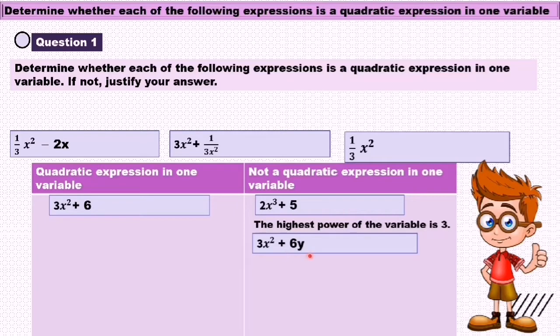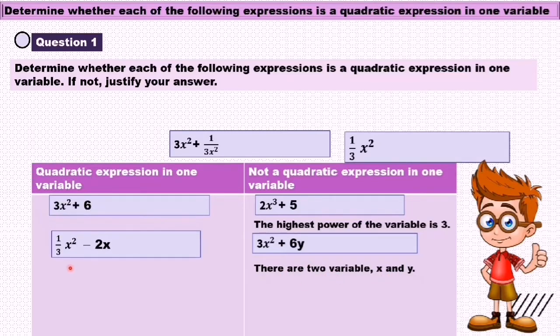3s² + 6y is not a quadratic expression in one variable because there are two variables, s and y. 1/3 s² - 2s is a quadratic expression in one variable.